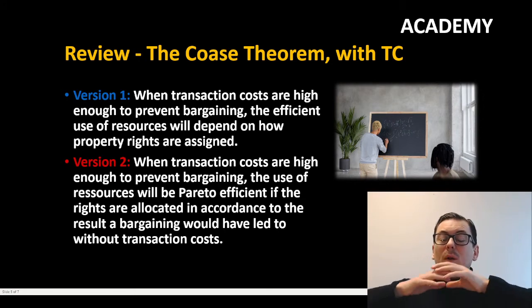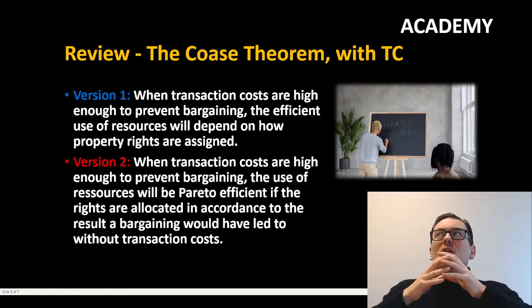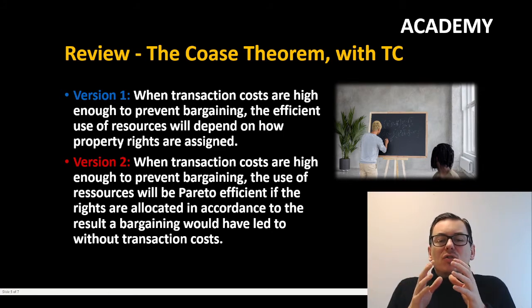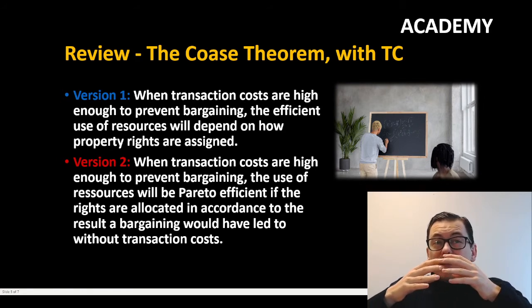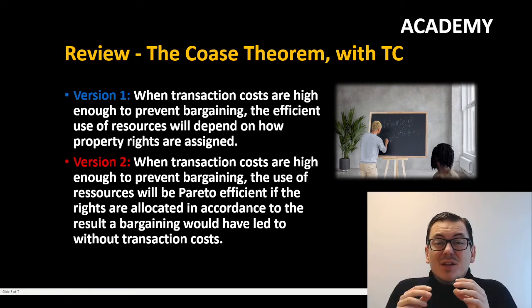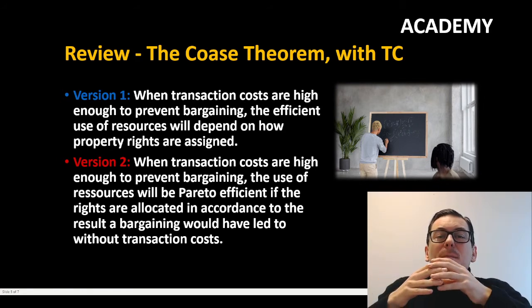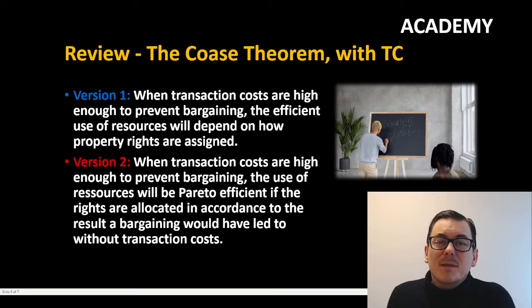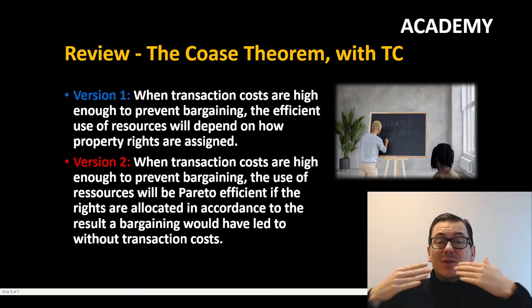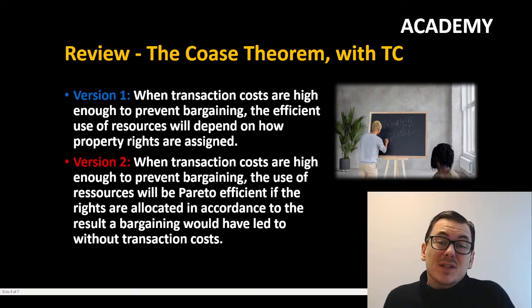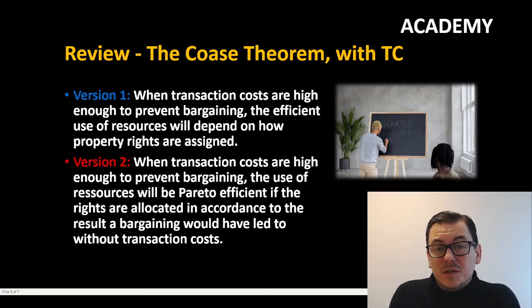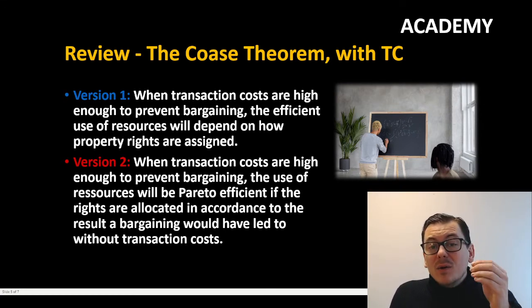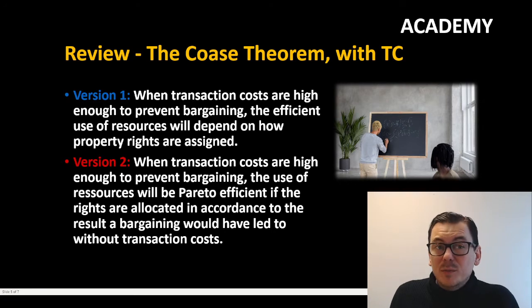So when we have transaction costs, we should try to allocate rights so they represent the agreement — the bargaining outcome — that the parties would have come to if transaction costs were not there. That allocation would be efficient. Now let's look at the normative version.